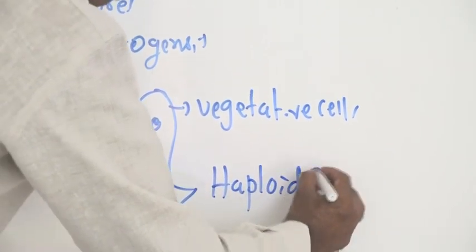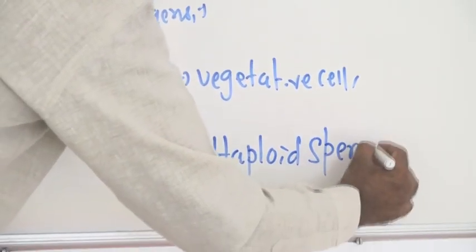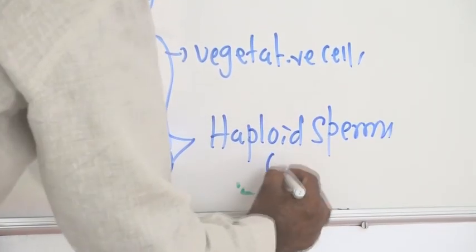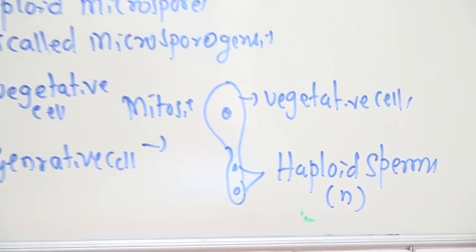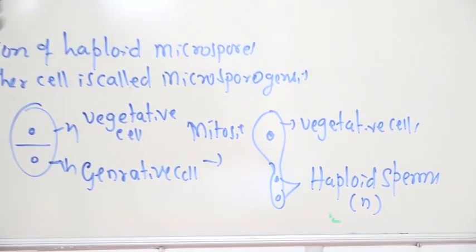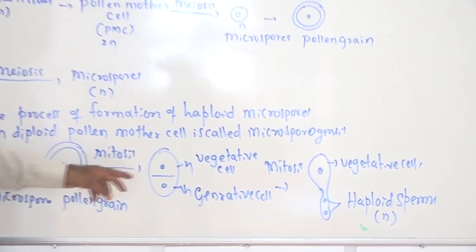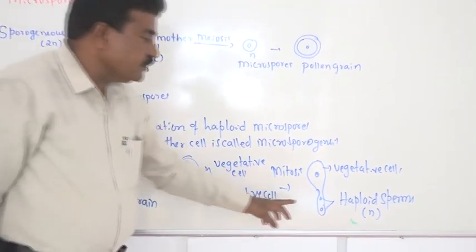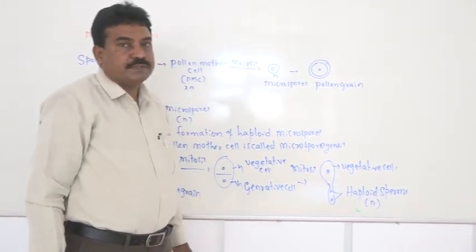In this way, during microsporogenesis the microspores are formed, and they later develop into pollen grains. Pollen grains finally give rise to haploid sperms.